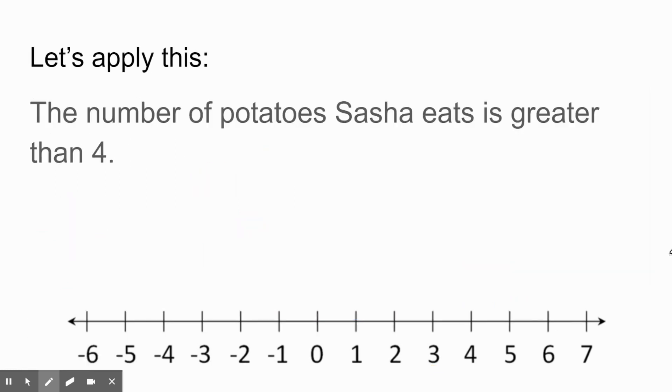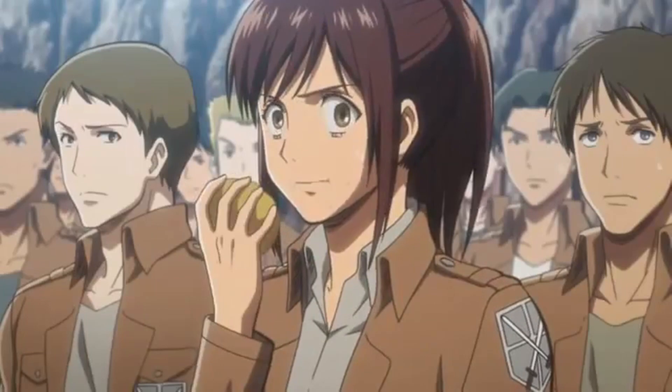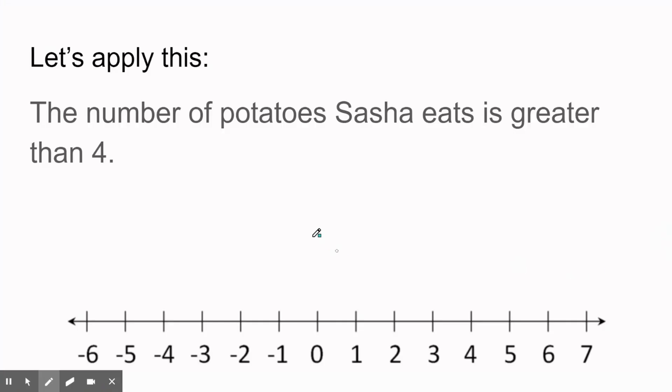Let's look at an example where we have a word problem. The number of potatoes Sasha eats is greater than four. So we're going to just come up with our own variable since it doesn't give us a variable. Let's use p for potatoes, and we know that the number of potatoes has to be greater than four. So we can write this inequality: p is greater than four.